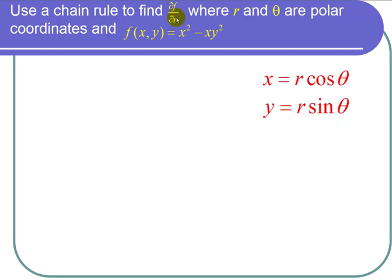We want to find ∂f/∂r, so we use the chain rule. Notice that f is a function of two variables x and y, and x and y are both functions of the two variables r and θ.